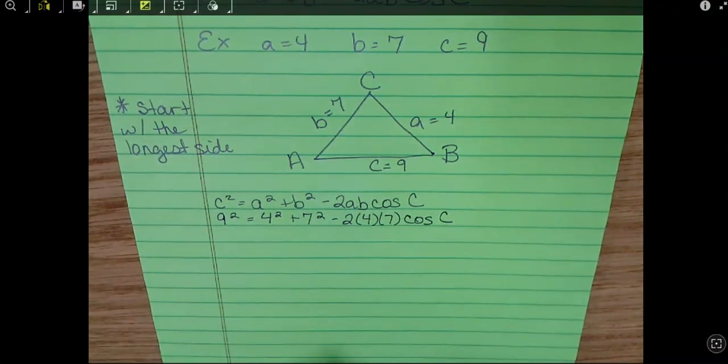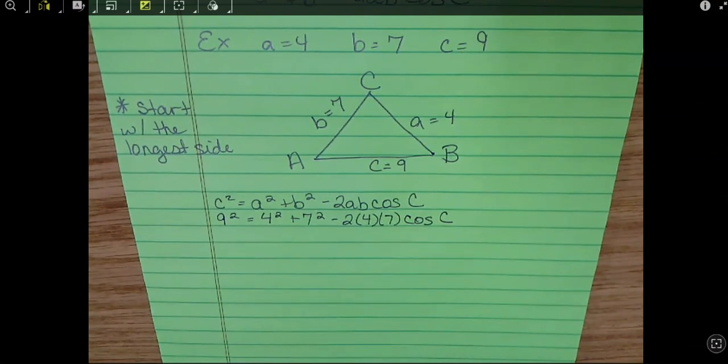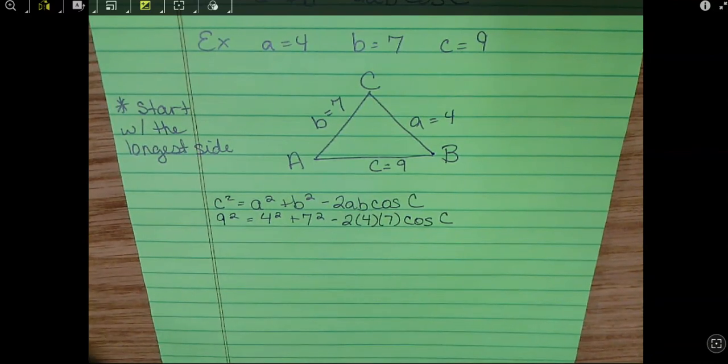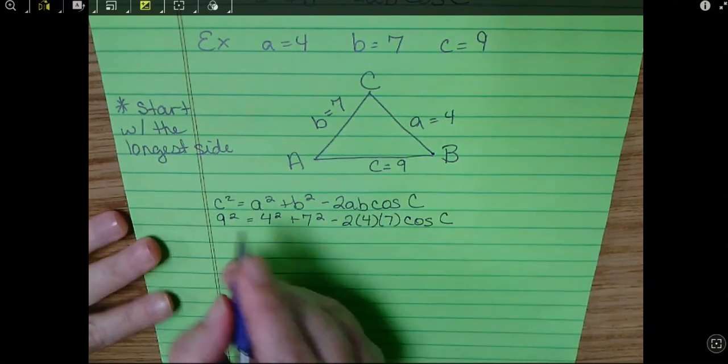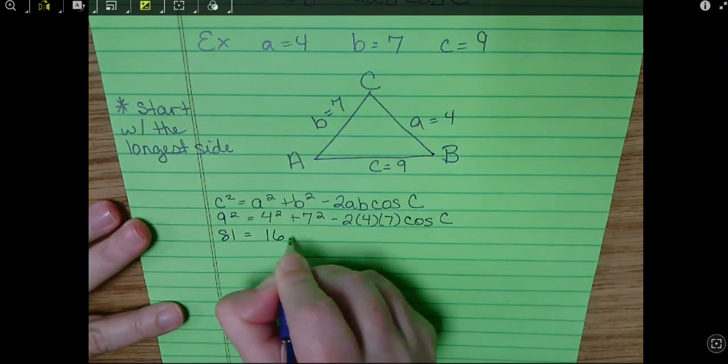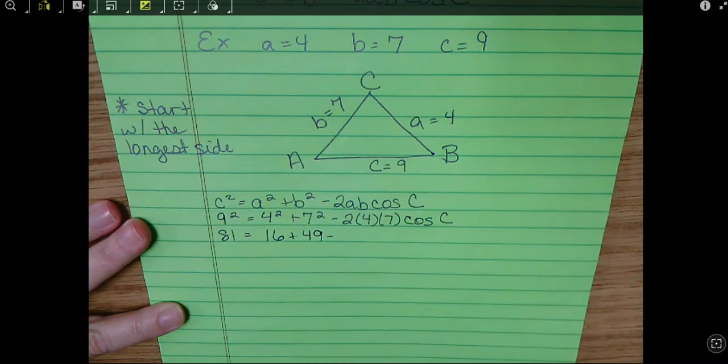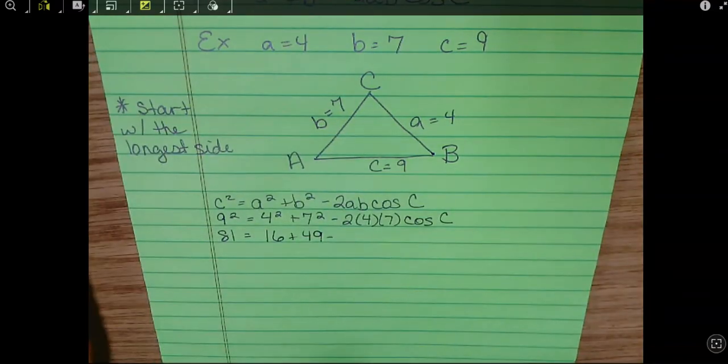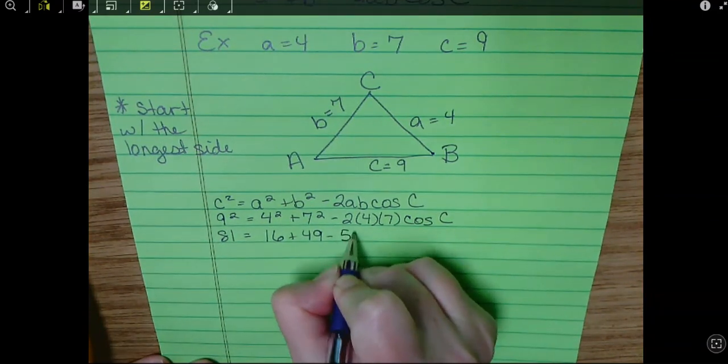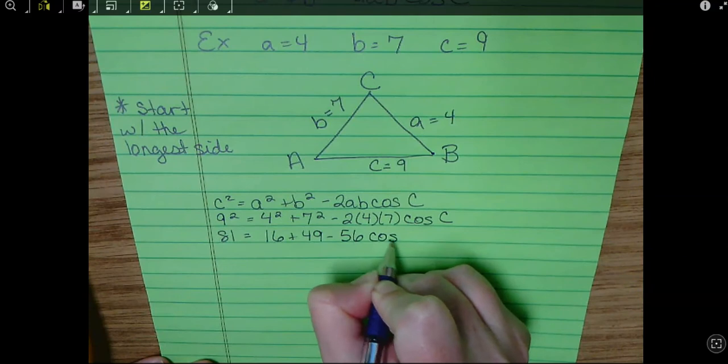So we'll get 9 squared equals 4 squared plus 7 squared minus 2 times 4 times 7 cosine C. Now, you've got to be very careful. We're not going to handle this all at once. In fact, we're going to handle it very slowly. Okay, so 9 squared is 81. 16 plus 49 minus, okay, so here we go. 2 times 4 times 7 is 56 cosine C.